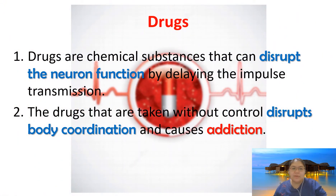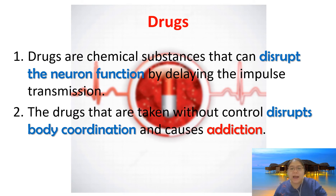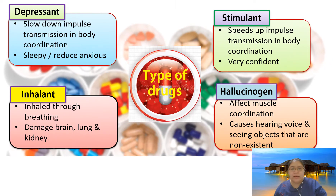Now we need to go to the next subtopic: drugs. Drugs are chemical substances that can disrupt neuron function — our nerve function — by delaying the impulse transmission, meaning your actions become slow. Drugs are taken without control, which disrupts the body coordination and causes addiction, meaning you cannot control yourself.